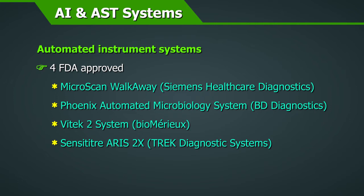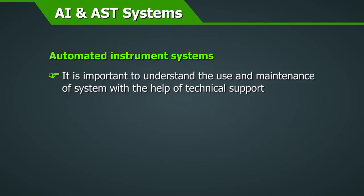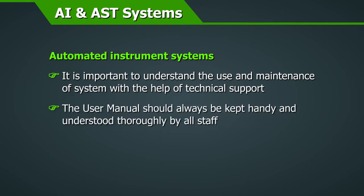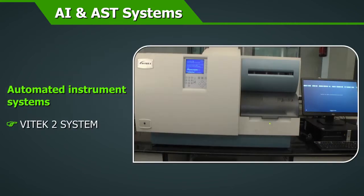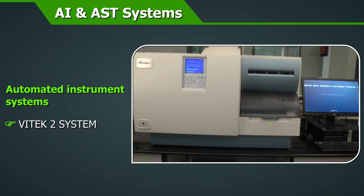Different labs can use different automated identification and AST systems. It is important to understand the use and maintenance of your system with the help of technical support. The user manual should always be kept handy and understood thoroughly by all staff who handle the instrument. For details on maintenance of all automated identification and AST systems, please refer to the training module on equipment management. We will discuss the Vitek 2 system in this demonstration.